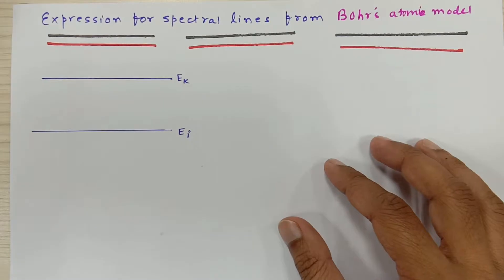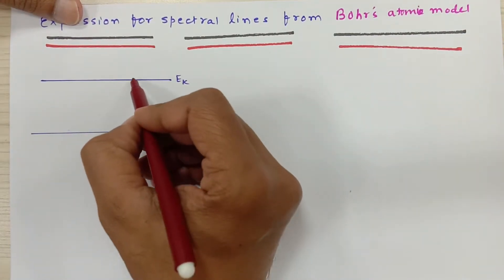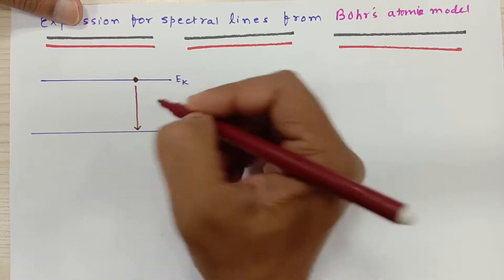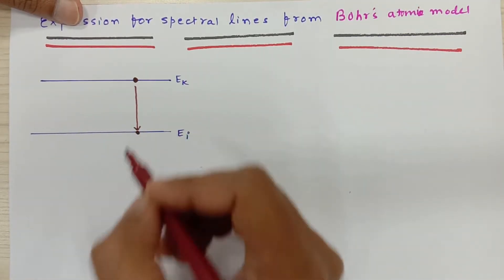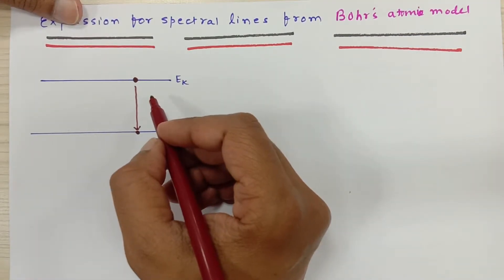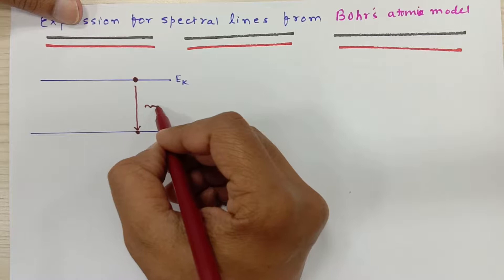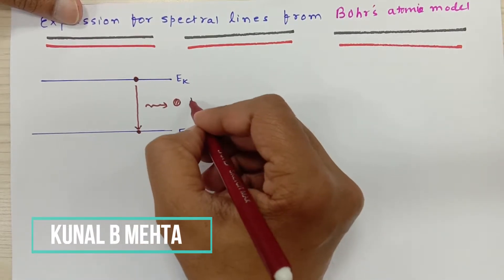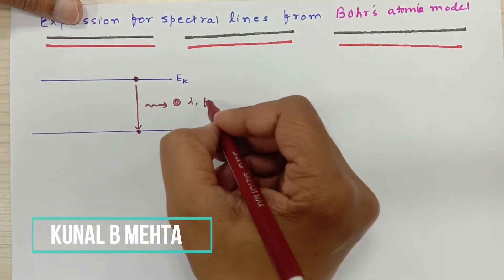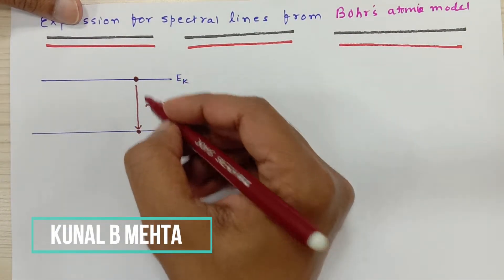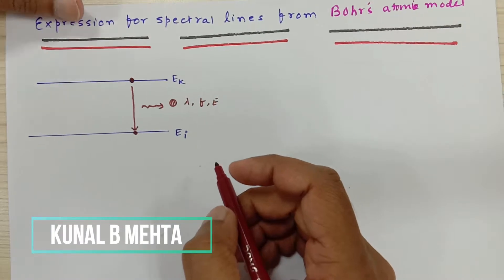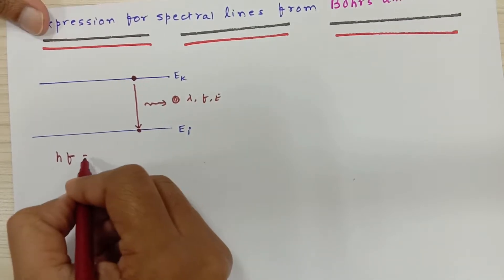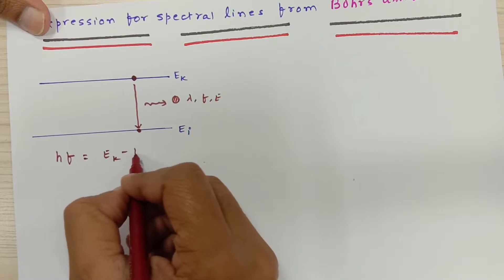So we have an electron in a higher orbit — that higher orbit energy is Ek — and this electron falls down to a lower energy orbit. As per the postulate given by Niels Bohr, a photon will be emitted, and this photon will have some wavelength lambda or frequency f. The energy of this photon will be equal to the difference in the energy of these two orbits. So the photon emitted will have energy Hf, and that will be equal to Ek minus Ei.